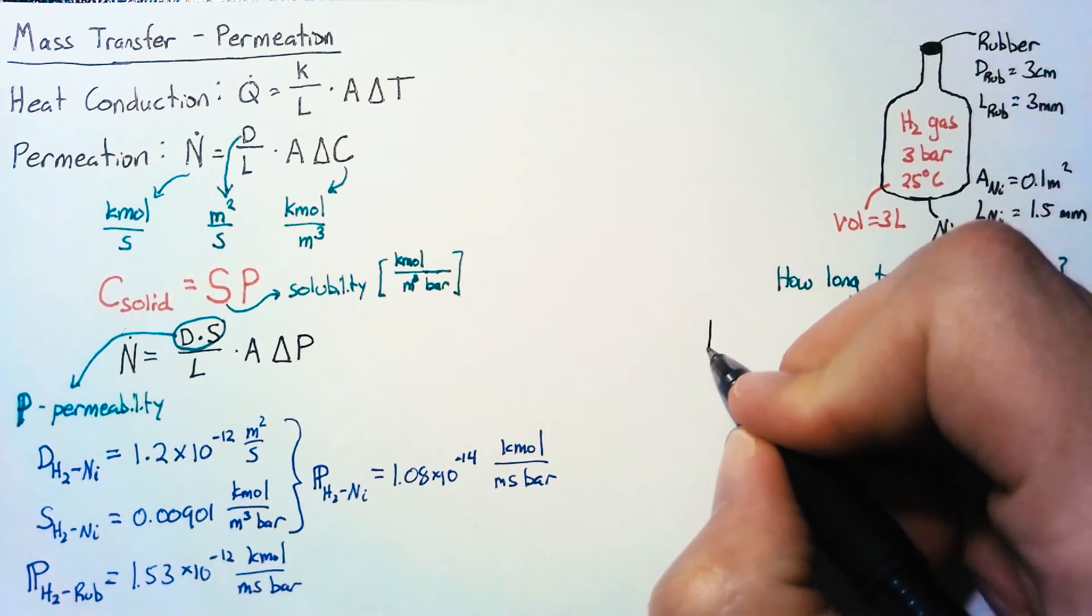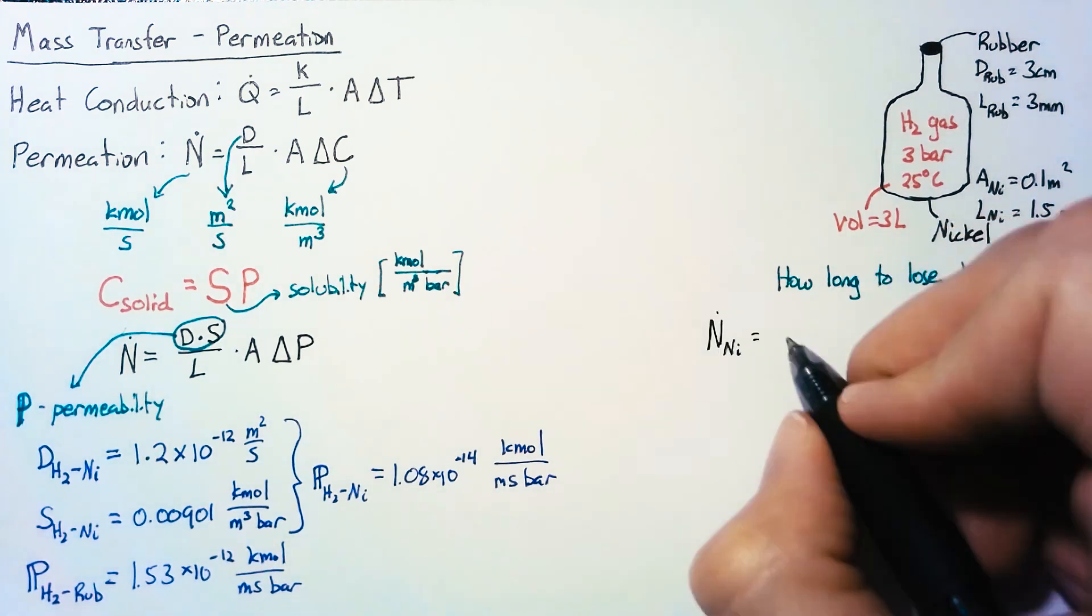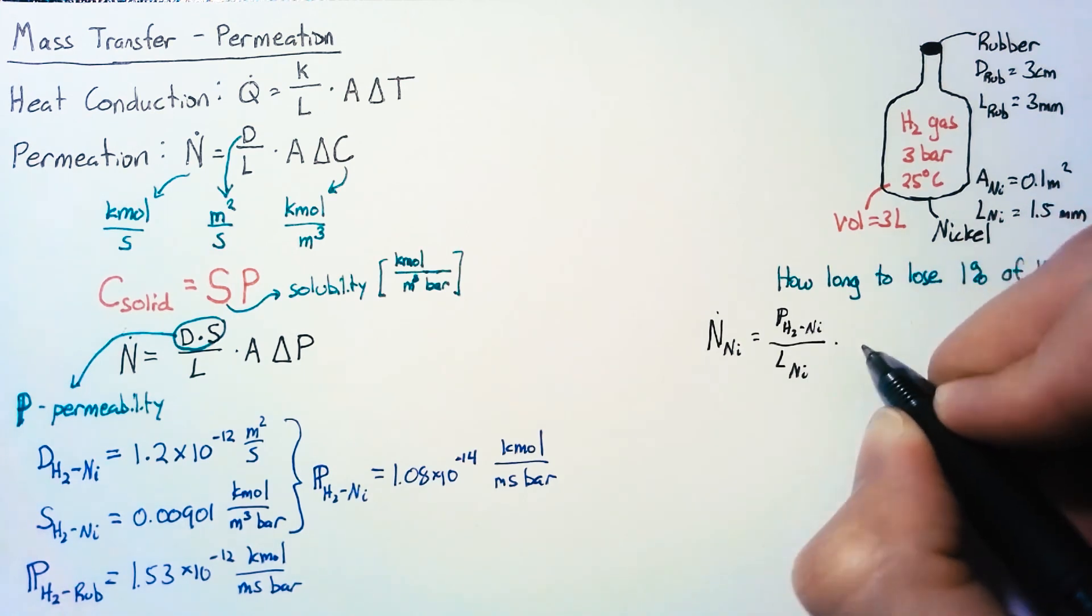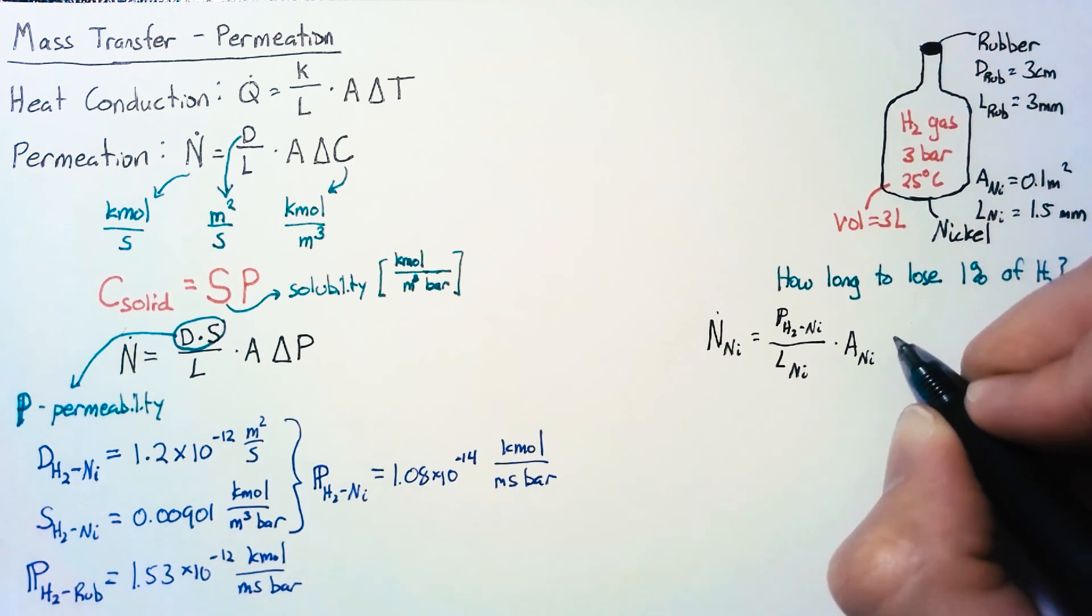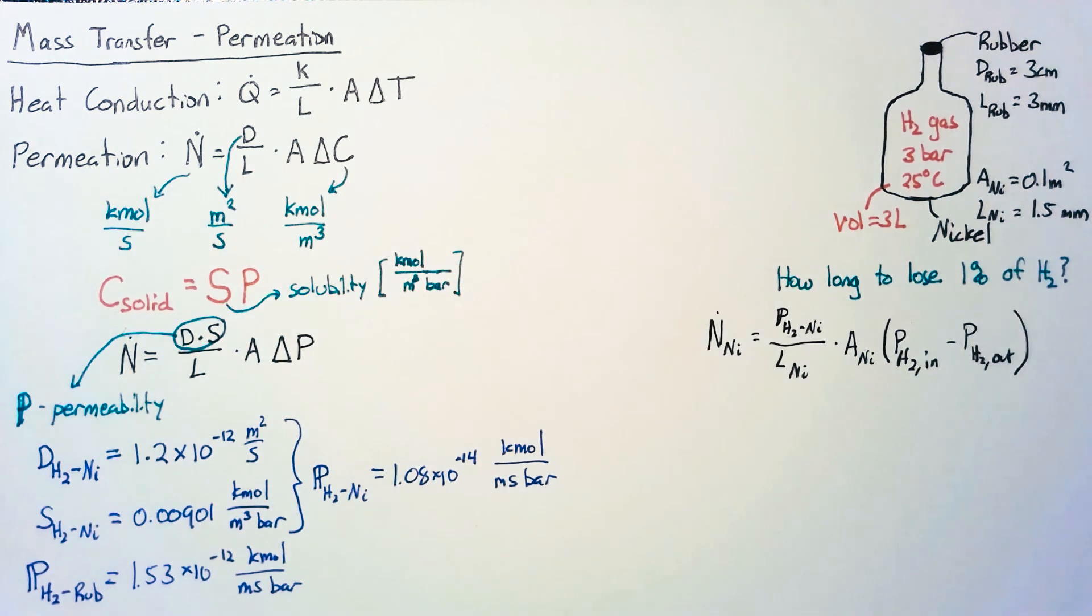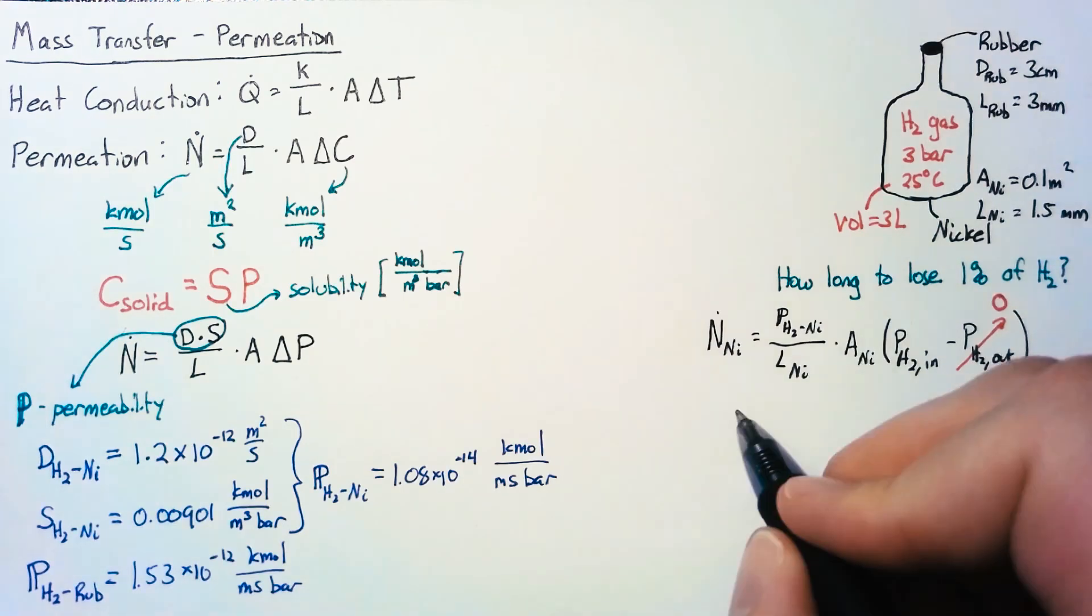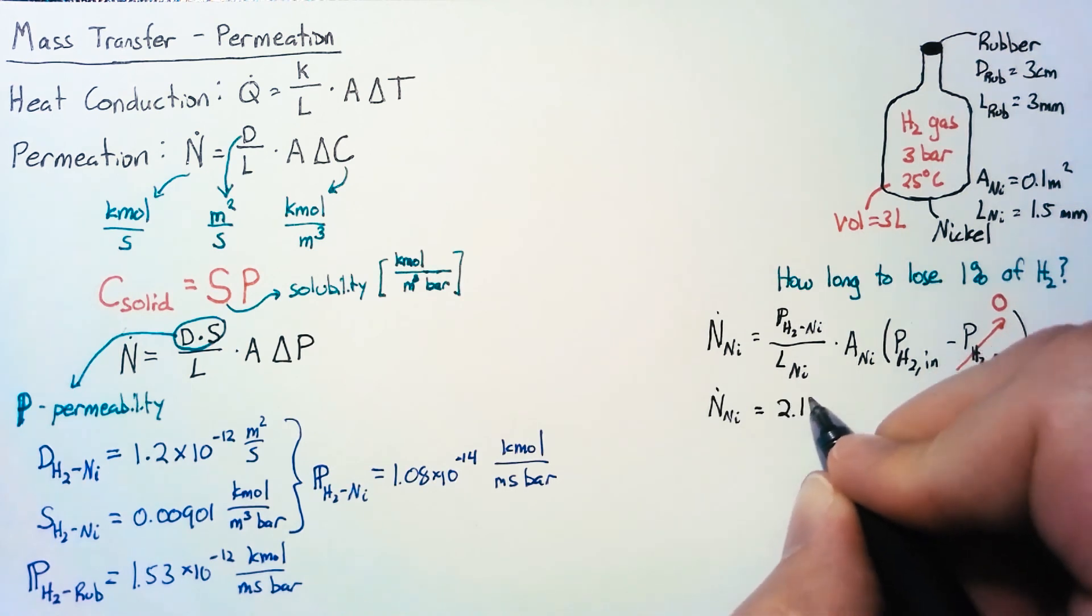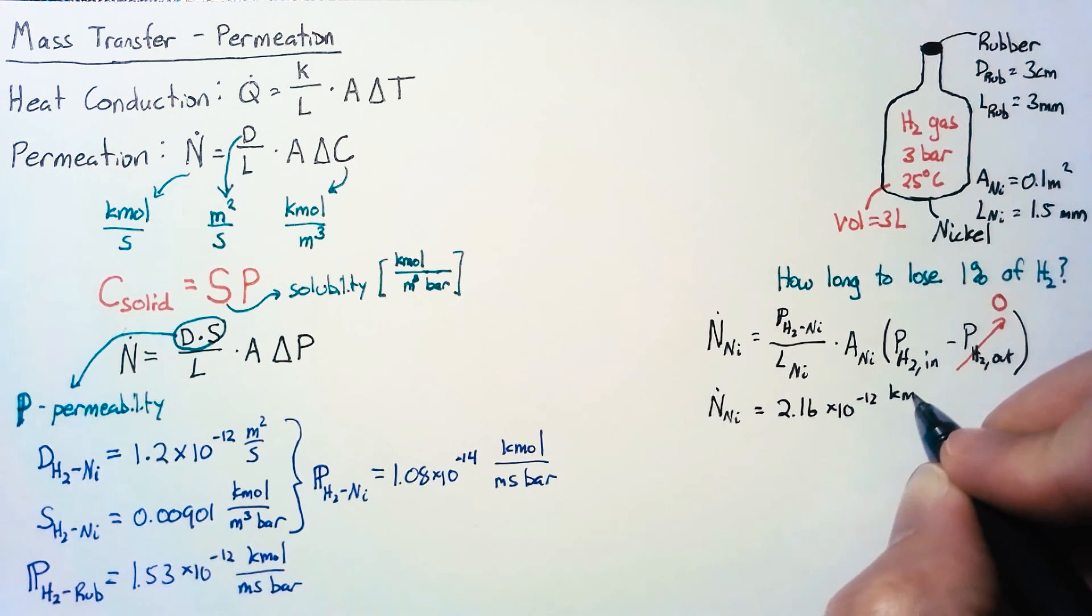Let's plug in these values. Our molar flow rate through the nickel will be the permeability of hydrogen through nickel divided by the thickness of our nickel, multiplied by surface area, and then by the change in partial pressure. Assuming the outside of our flask is air, the partial pressure on the outside is zero. Plugging these values in, we get a molar flow rate of hydrogen through nickel of 2.16 × 10⁻¹² kilomoles per second.